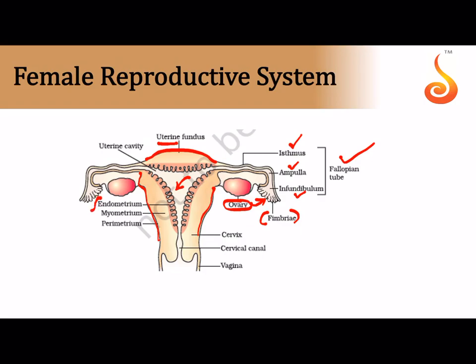The uterine wall is made up of three important layers. The outer membranous wall is called the perimetrium. The middle muscular wall made of smooth muscle cells is called the myometrium. The innermost wall is the endometrium, which is highly vascular and richly provided with glands.